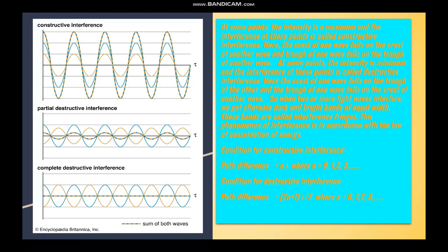The condition for constructive interference is that the path difference should be nλ, and the condition for destructive interference is that the path difference should be (2n+1)λ/2, where n is an integer. This can be derived, but we don't have the provisions here.